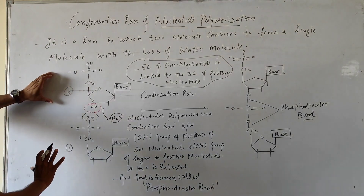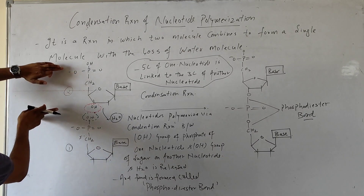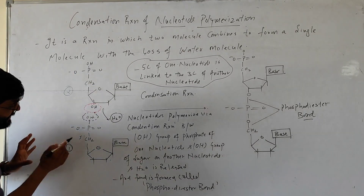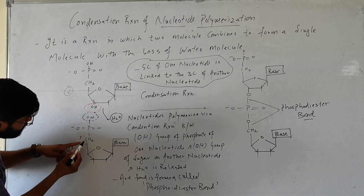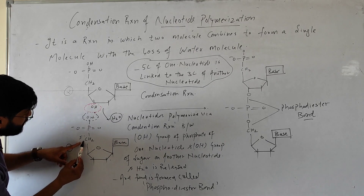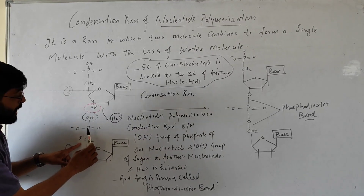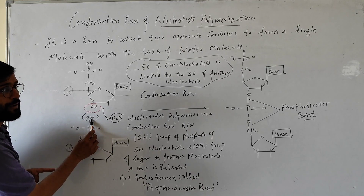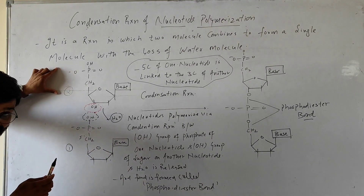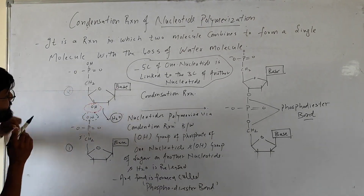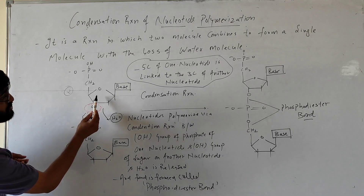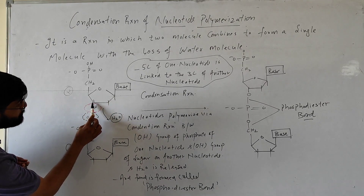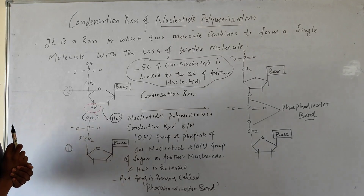So here we have two nucleotides. This is nucleotide one and this is nucleotide two. On this first nucleotide you can see that this is carbon number 5, and on carbon number 5 this phosphate group is present, and on this phosphate group there is a hydroxyl OH group. In this second nucleotide you can see that this is the sugar.